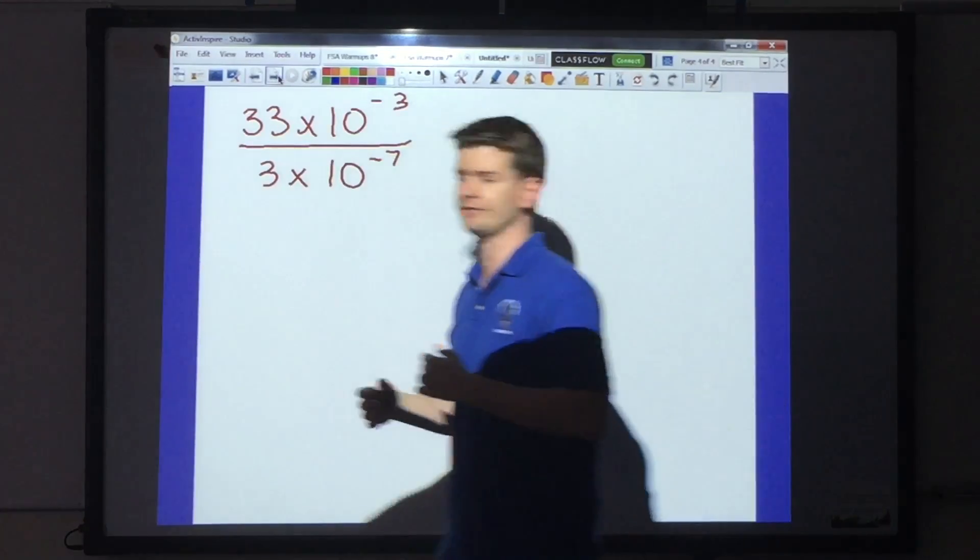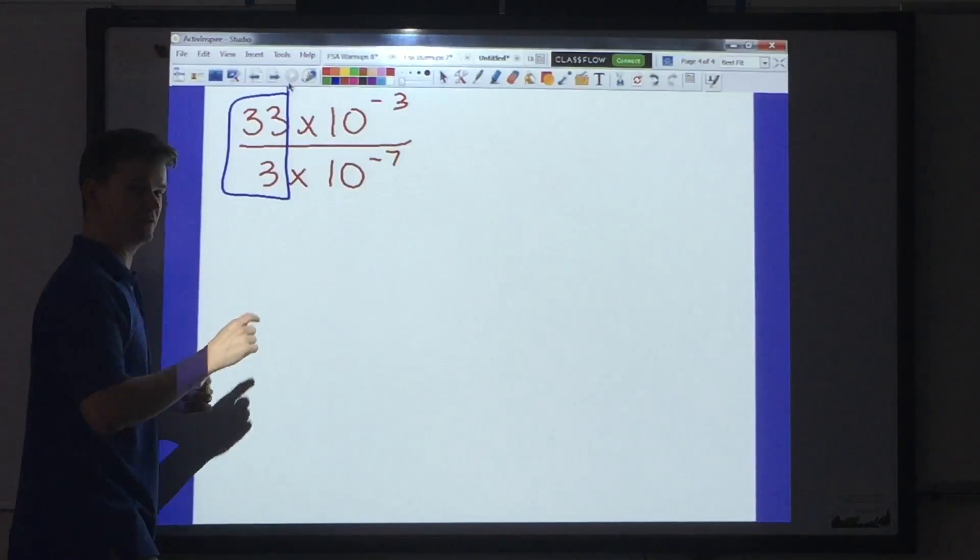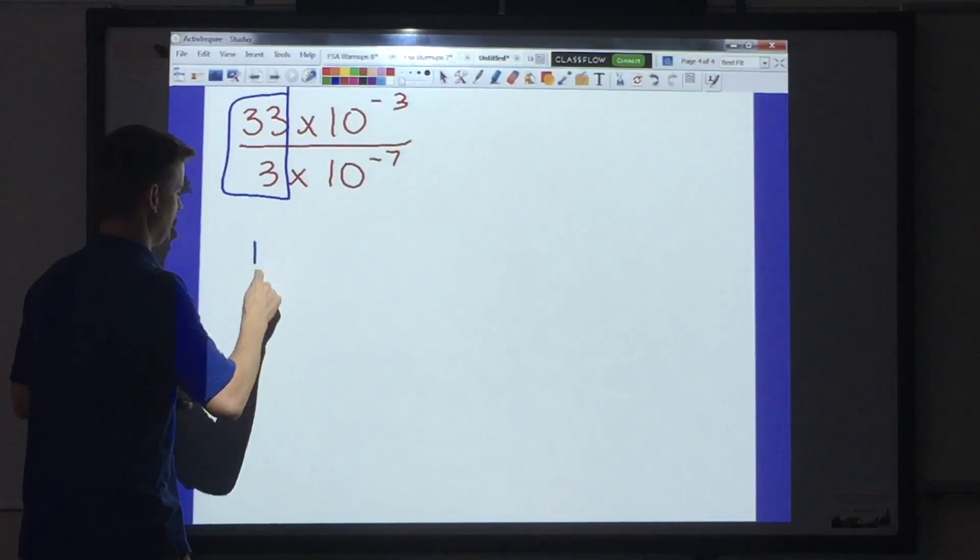So, once again, first step. Divide your factors. 33 divided by 3 gives me 11. Good job.